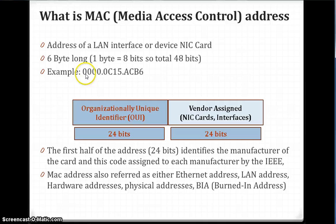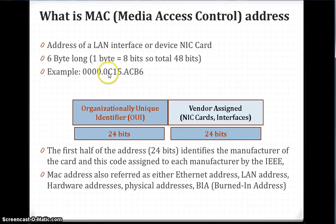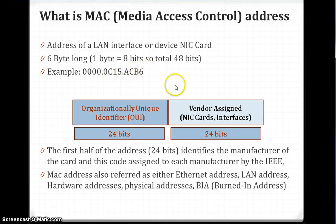It has pairs of characters — the first two make the 1st byte, the 3rd and 4th make the 2nd byte. So 1st byte, 2nd byte, 3rd, 4th, 5th, and 6th. That's how it is 6 bytes, and 6 times 8 equals 48 bits.